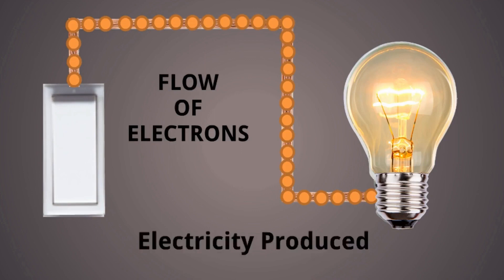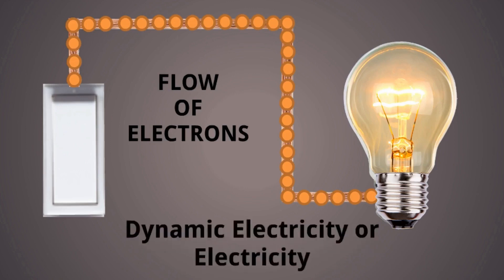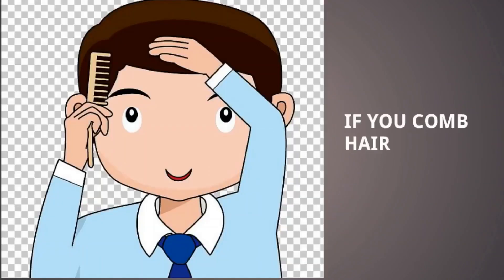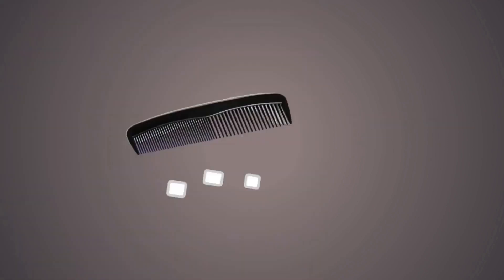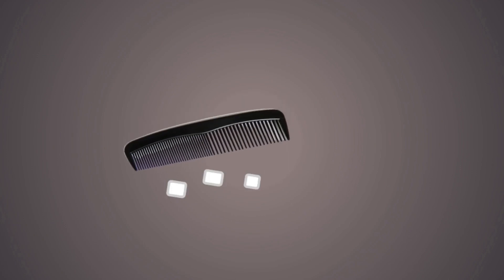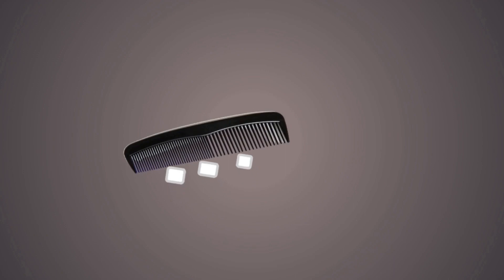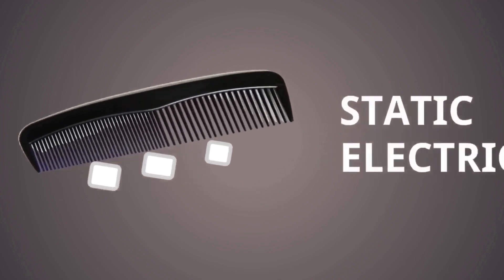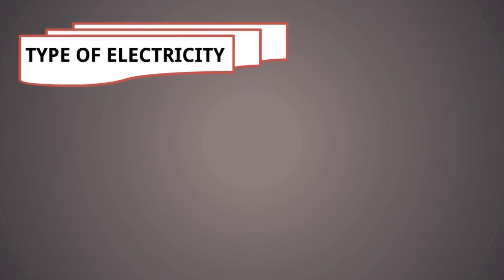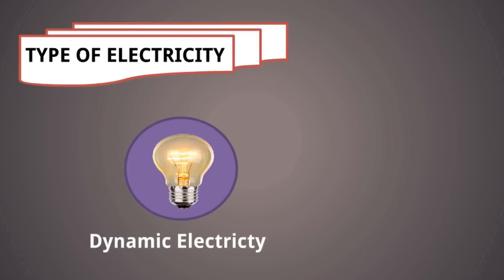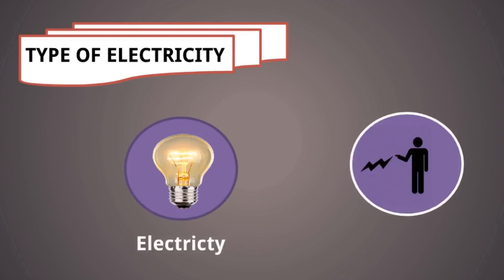But if you comb your hair a few times and take some small tiny pieces of paper, if you move your comb toward the paper, you will see all the paper is attracted. This is also one kind of electricity and it is known as static electricity. So based on our discussion, there are two types of electricity: one is dynamic electricity and another one is static electricity.